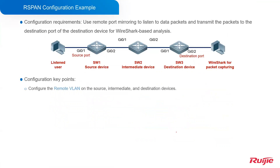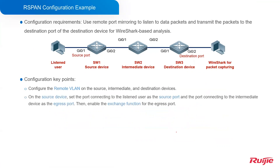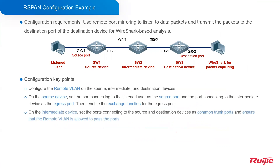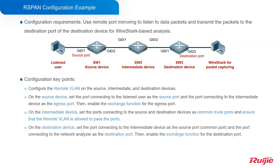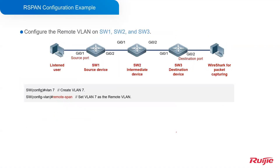For key points: first, configure the remote VLAN on the source, intermediate, and destination devices. On the source device, set the port connecting to the listened user as the source port, and the port connecting to the intermediate device as the egress port, then enable the exchange function for the egress port. On the intermediate device, set the ports connecting to the source and destination devices as common trunk ports, and ensure that the remote VLAN is allowed to pass through the port. On the destination device, set the port connecting to the intermediate device as the source port and the port connecting to the network analyzer as the destination port, then enable the exchange function for the destination port.